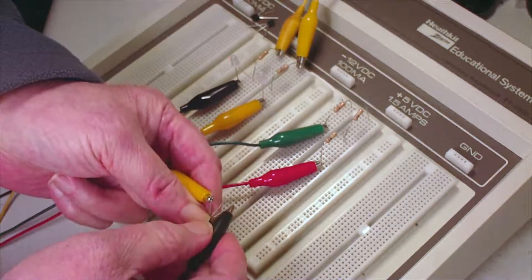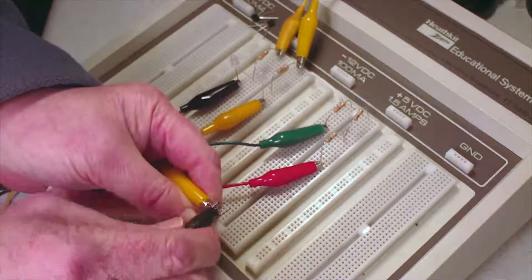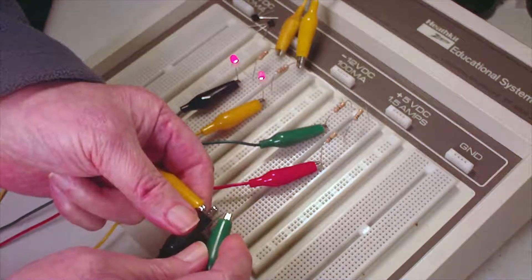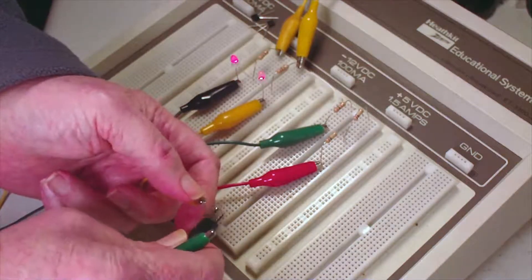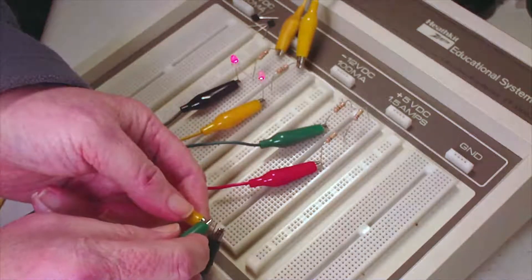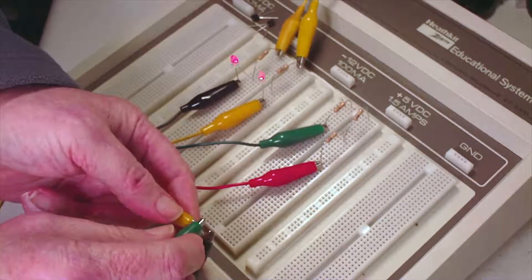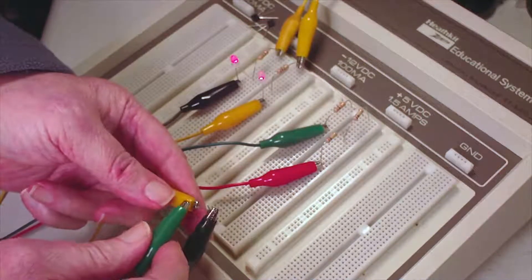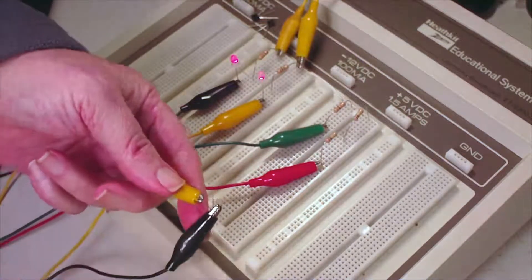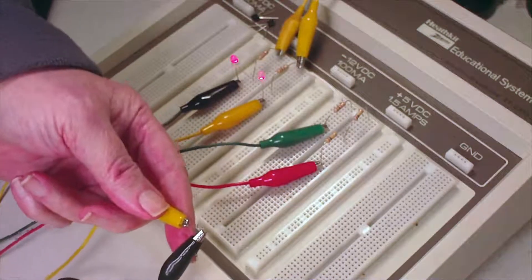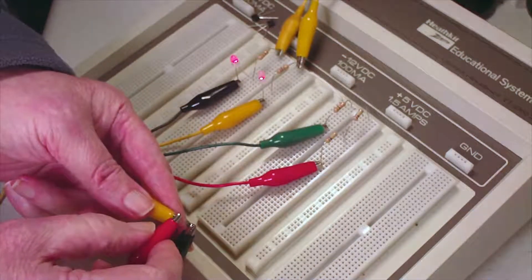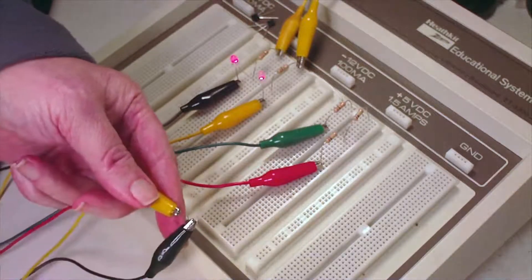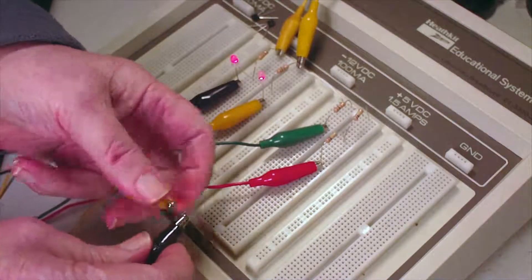Now that's red, so this is a PNP transistor. Okay, that in the center, get our green lead - nothing. Okay, red green there in the center, so that means that this is C, B, and E. With our red lead here, it changes a little bit, so it's a fairly good gain transistor.